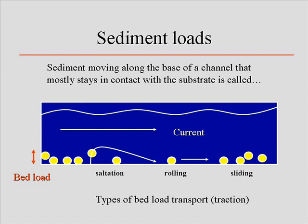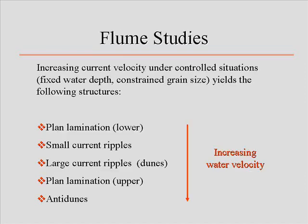Bed load includes saltation, rolling, and sliding. We talked about primary sedimentary structures — those associated with currents — and how they form in increasing water velocity under ideal flume conditions. It goes from planar lamination through small current ripples, through to large current ripples. Mega ripples is the preferred term over dunes. Then upper planar lamination followed by anti-dunes, and once you get beyond the threshold of anti-dunes, you're no longer moving sediment by traction — everything gets blasted out and you go from bed load into suspended load.